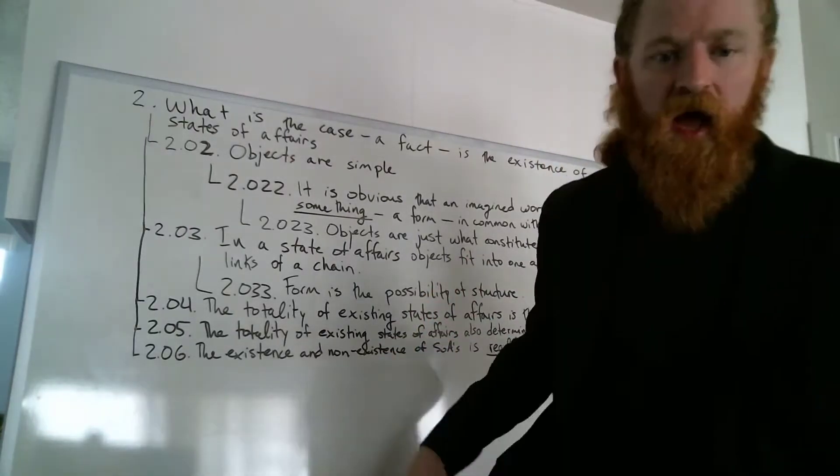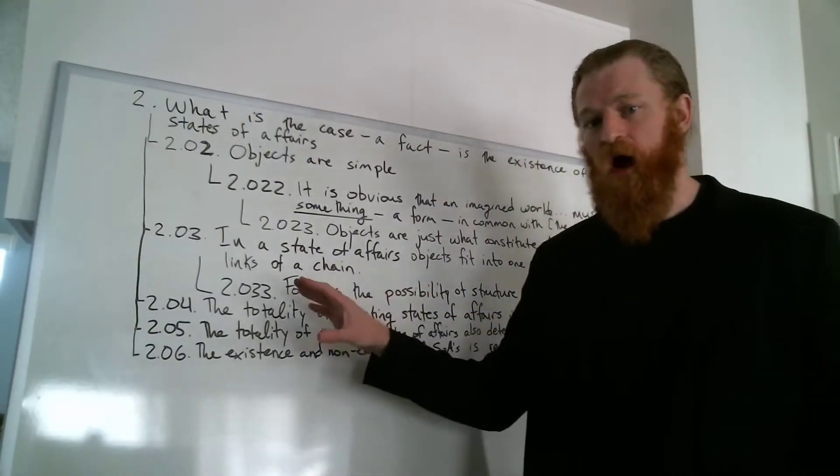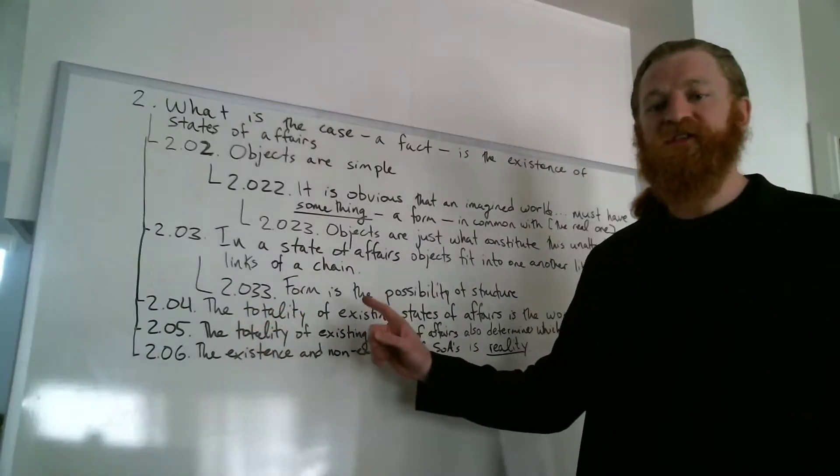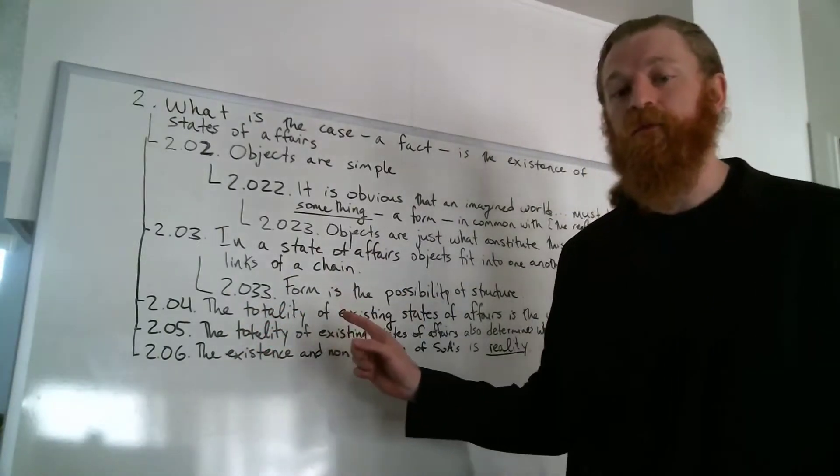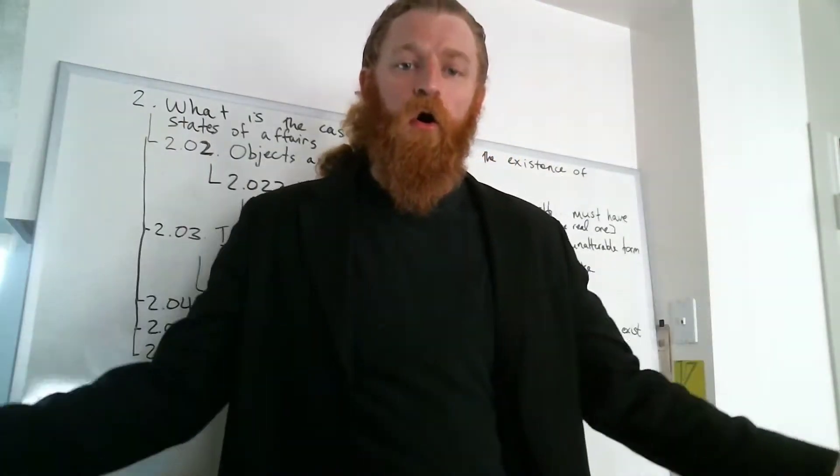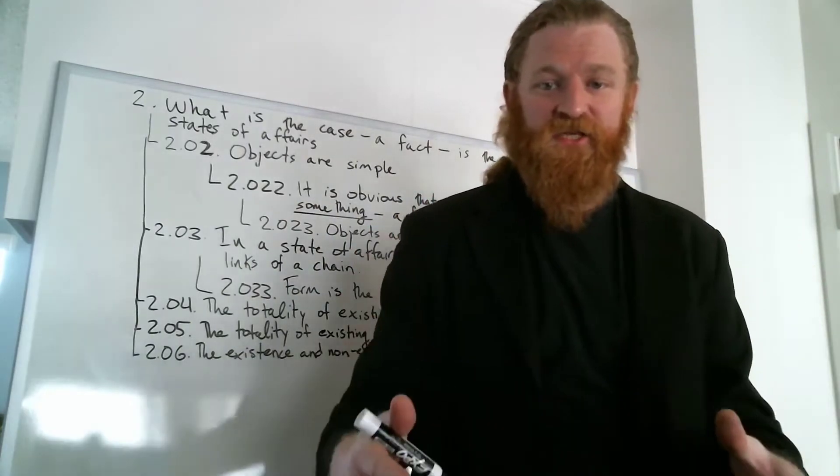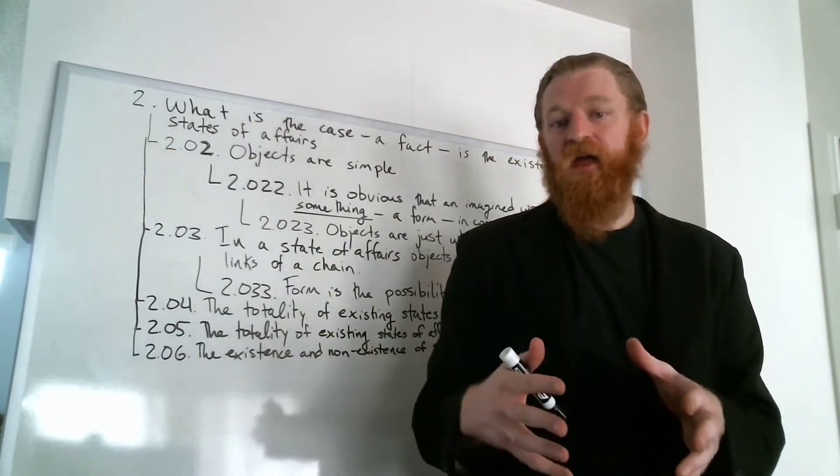So there are other possible states of affairs that aren't actual. And what we're saying here is that the underlying potential for those objects to reconfigure determines not only the actual world but the possible one. So our world, the way it really is, determines reality as a whole. That's why by having access to this world we can think about non-existent things.